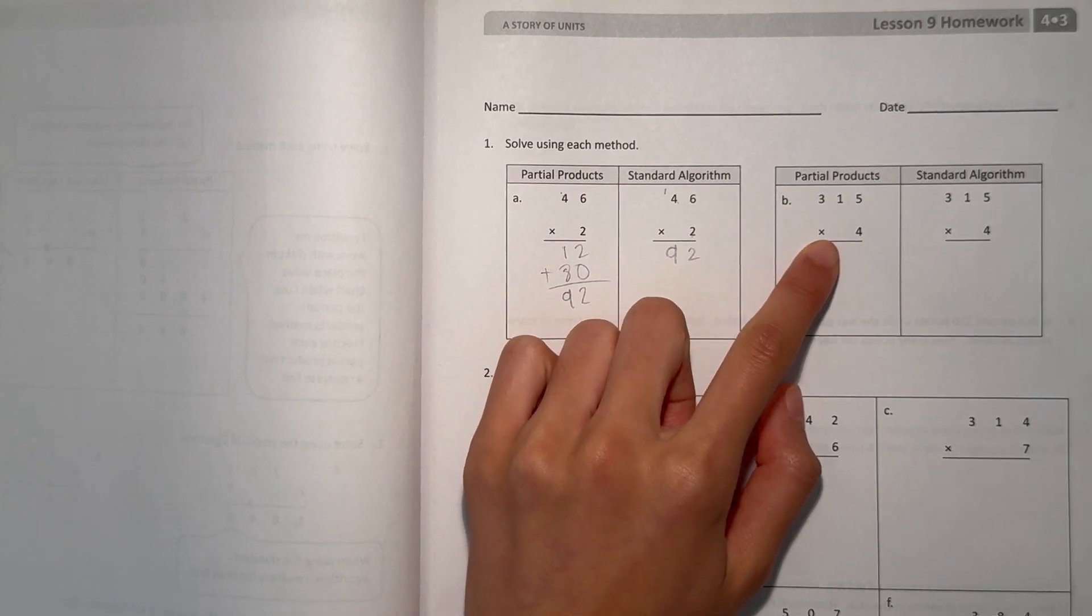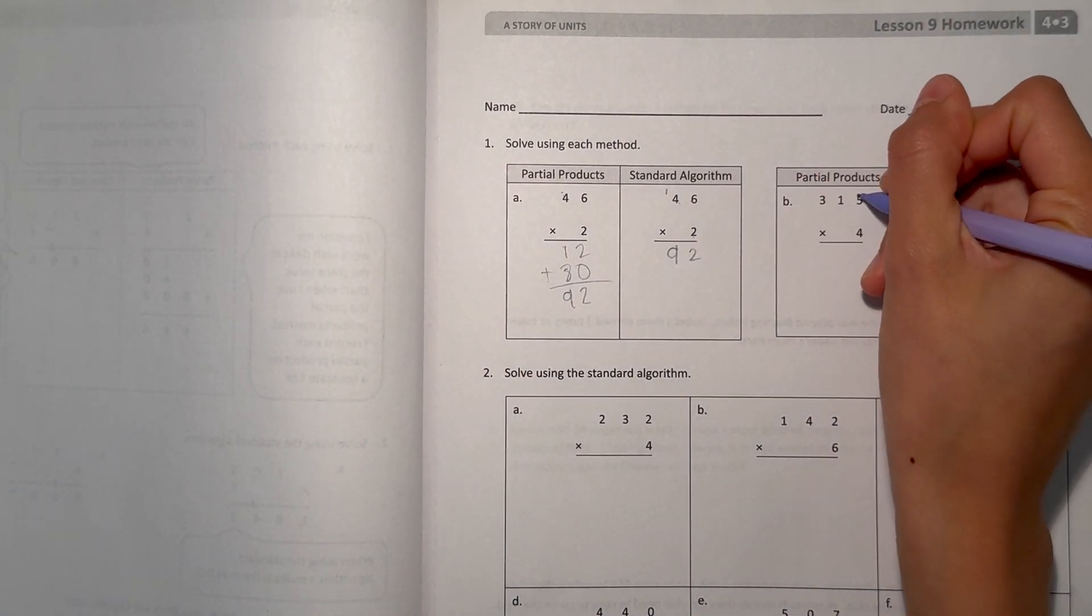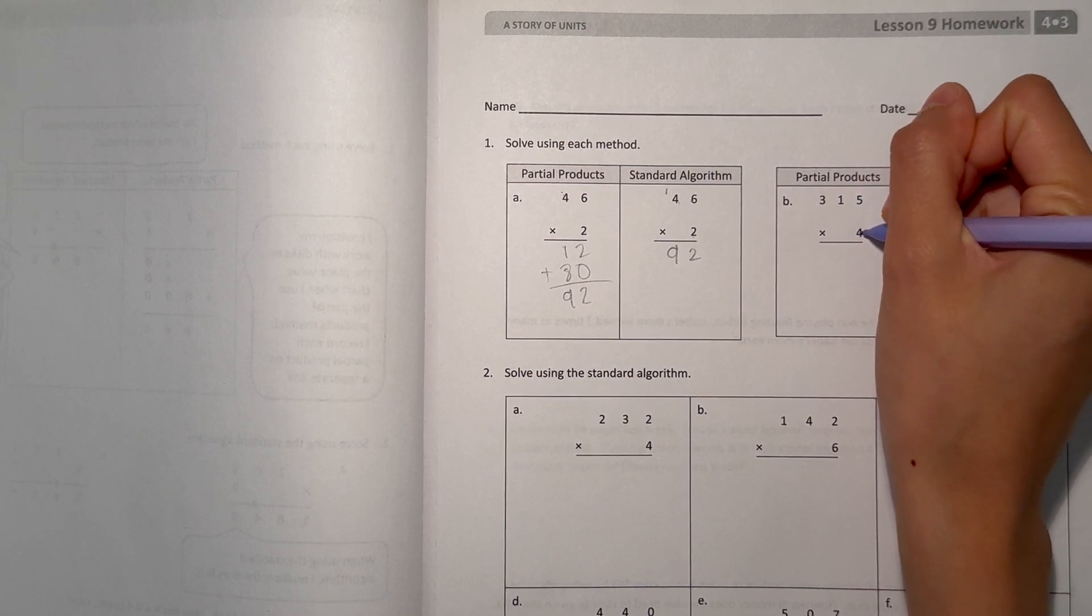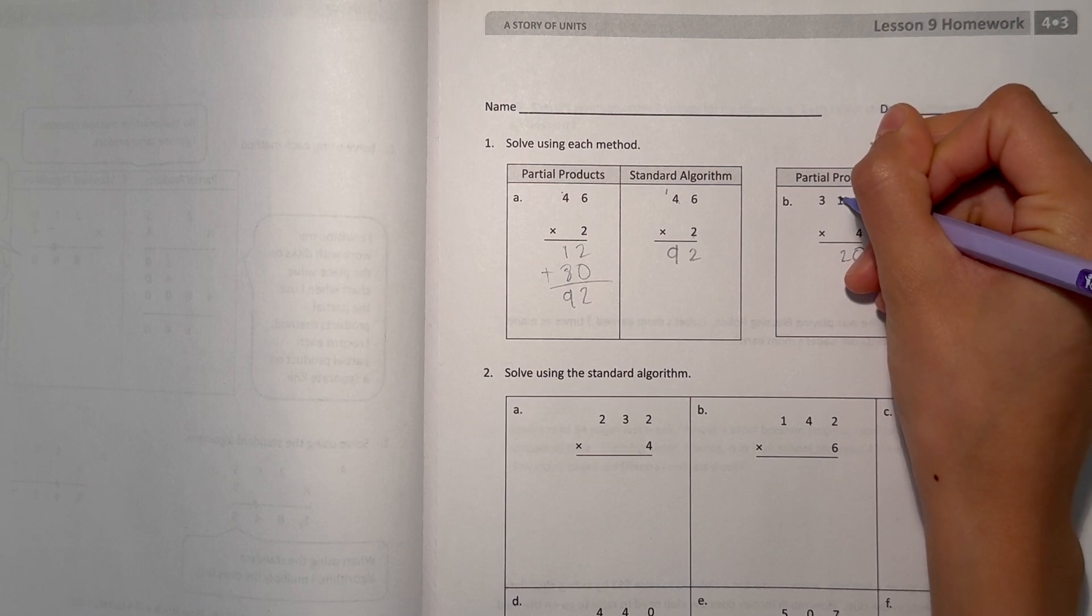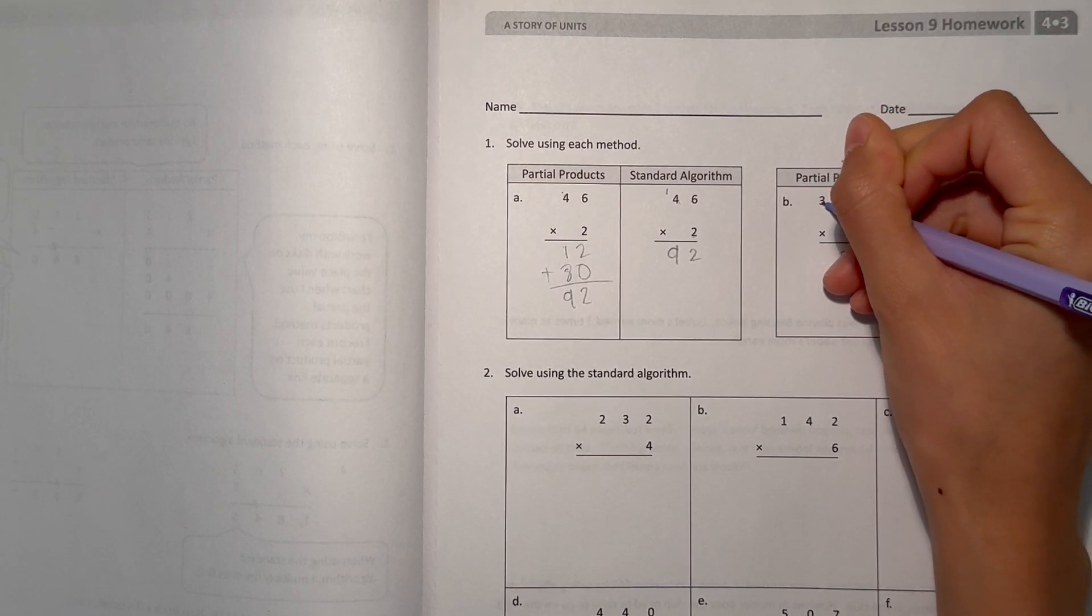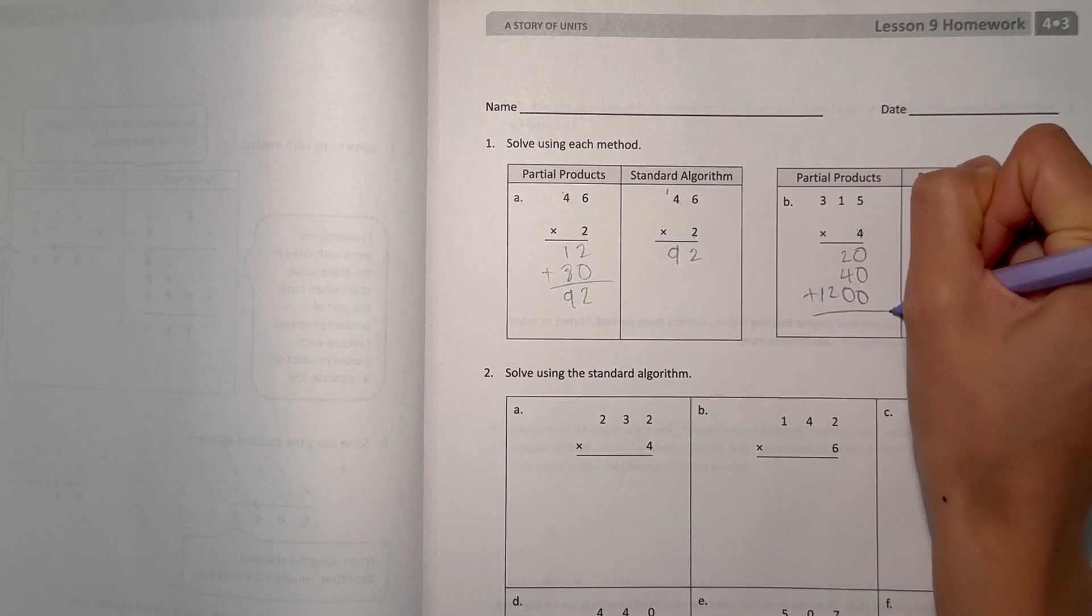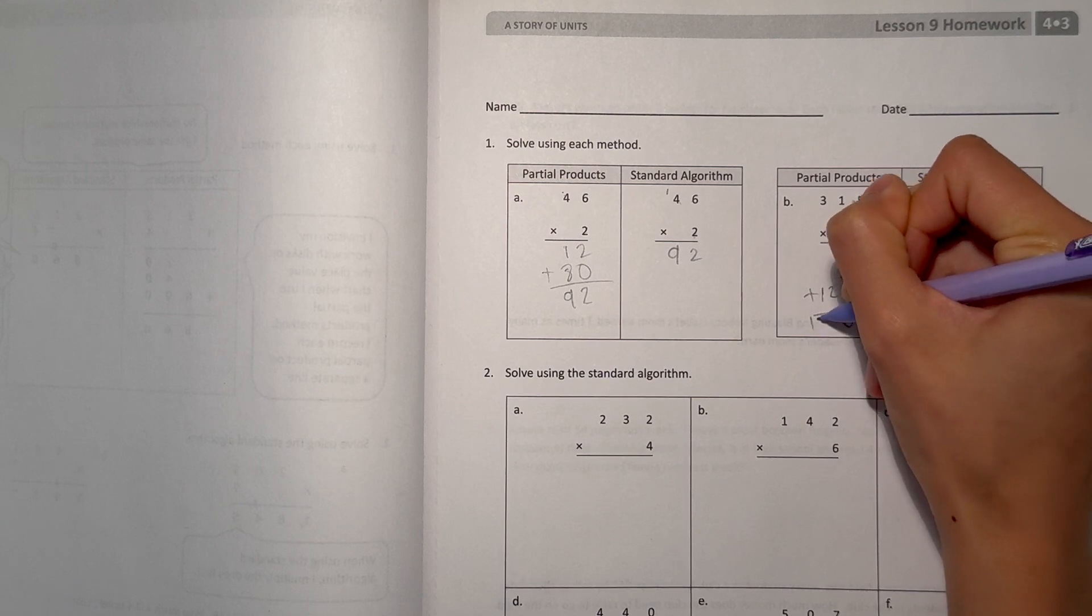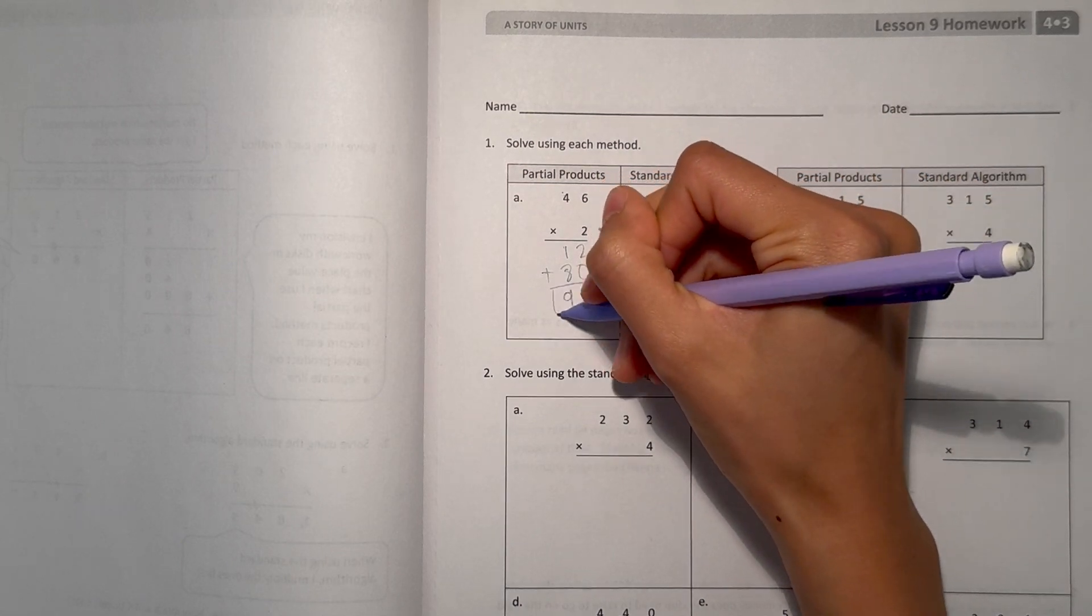B, 315 times 4, partial products, we do each digit individually times 4. So 4 times 5 is 20. 4 times 10, because that 1 is in the tens place, that's 40. And 4 times 300 would be 1,200. So add it all up together, our answer is 1,260.